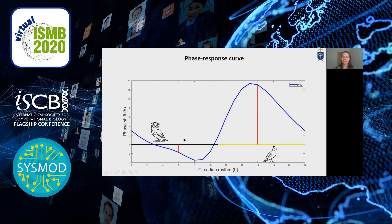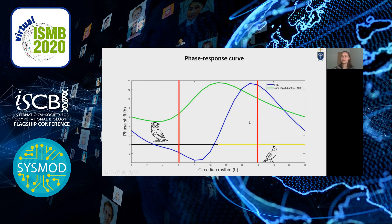I analyzed this especially at 6 and 16 hours. Furthermore, due to the clock-dependent expression of PRD4, the total active concentration of PRD4 is different at different times of perturbation, reflecting different strengths of the effect.